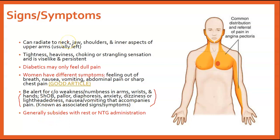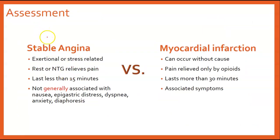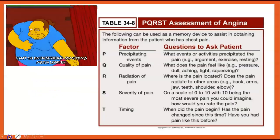With stable angina, pain subsides with rest or nitroglycerin administration; if not responding, be more concerned about an MI. Side by side: stable angina is exertional or stress-related, relieved by rest or nitroglycerin, usually lasts less than 15 minutes, and is generally not associated with nausea, epigastric distress, dyspnea, anxiety, or diaphoresis. An MI can occur without a cause, pain is usually only relieved by opiates, lasts more than 30 minutes, and has other associated symptoms.